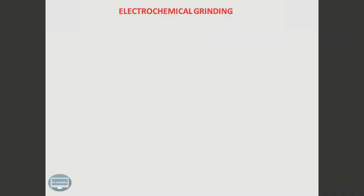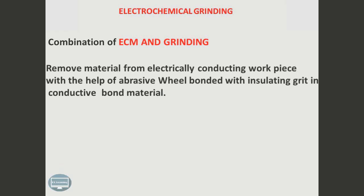Today we will discuss the electrochemical grinding process. It is the combination of ECM and grinding process - electrochemical machining and grinding process. It removes material from electrically conducting workpiece with the help of an abrasive wheel bonded with insulating grit in conductive bond material.